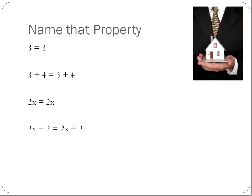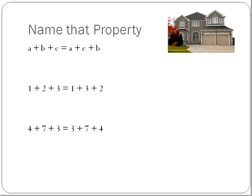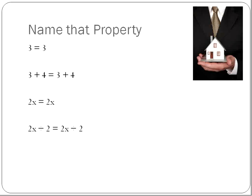Name this property: what property is it when you've got something like 3 and 3, and then I add 4 to one side, I'm going to add 4 to the other side? Or 2 times x equals 2 times x, or 2x divided by 2 equals 2x divided by 2? When I do something to one side of the equation, I also do it to the other. That is the property of equality. If you do it on one side, you do it on the other — property of equality.